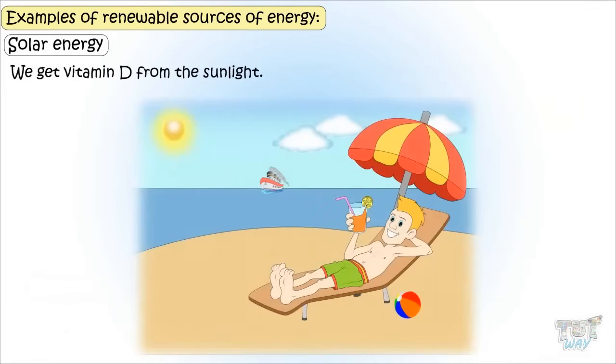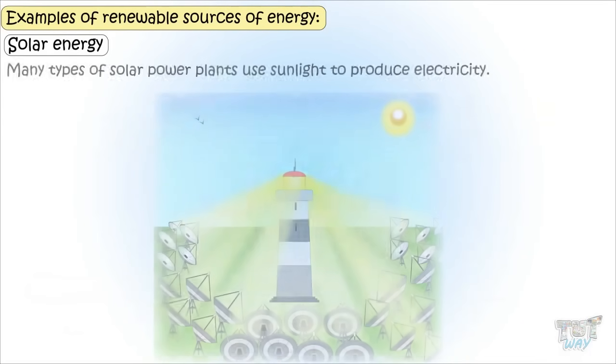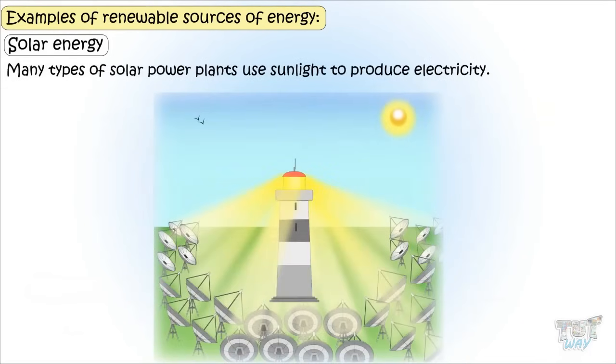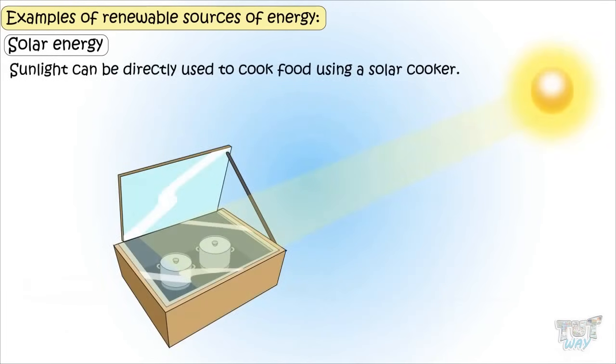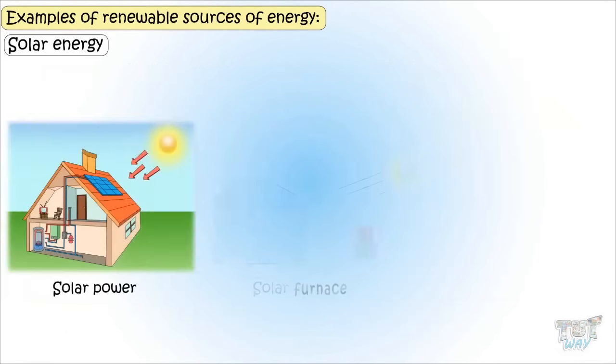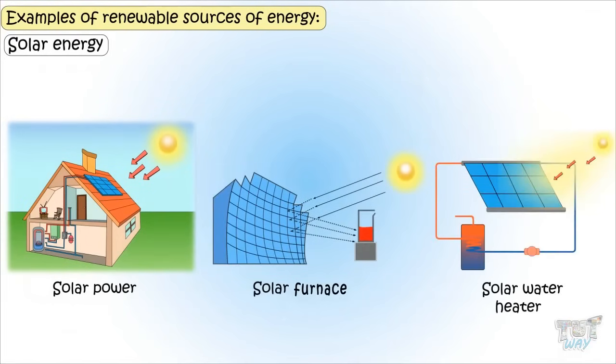We get vitamin D from this sunlight. Many types of solar power plants use sunlight to produce electricity. Sunlight can be directly used to cook food using solar cookers. And many more devices are there to trap the solar energy and bring it to use.